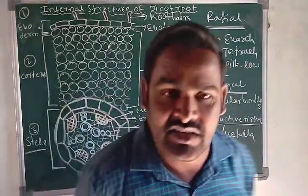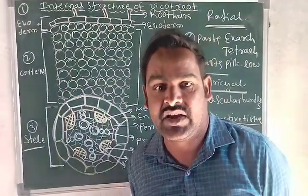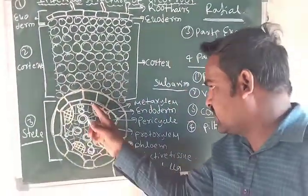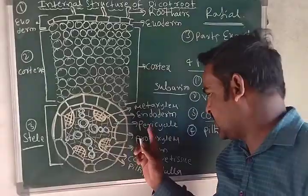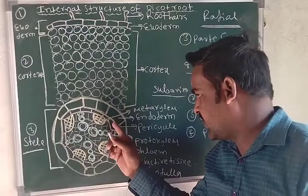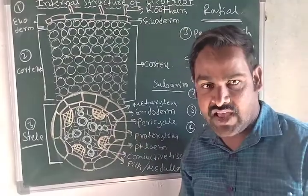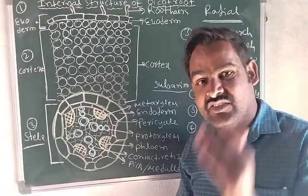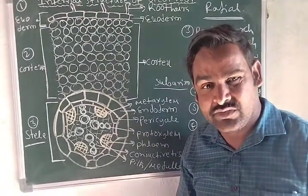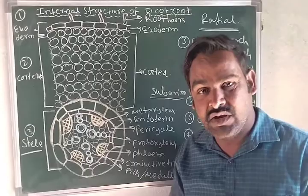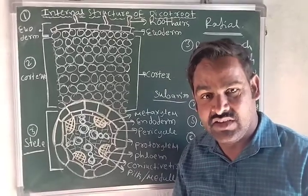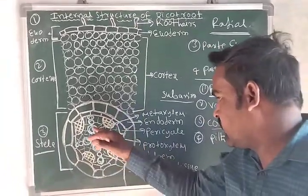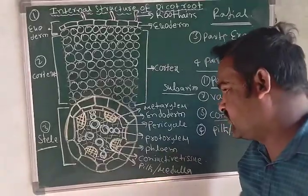The pericycle also contains parenchyma cells. The pericycle mainly has two functions: one is the formation of lateral roots, and the second is that it is involved in secondary growth.